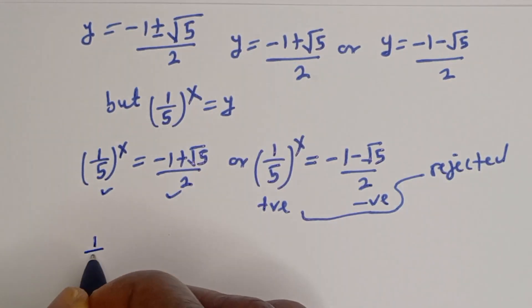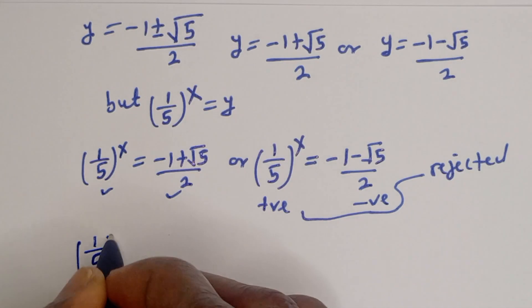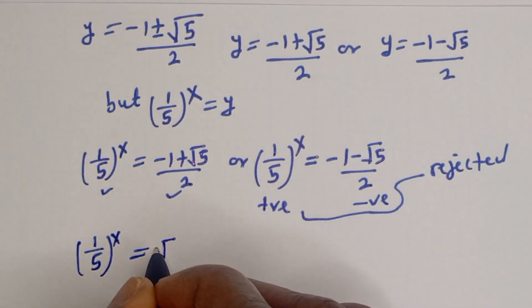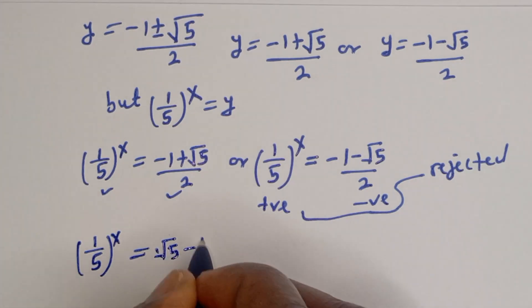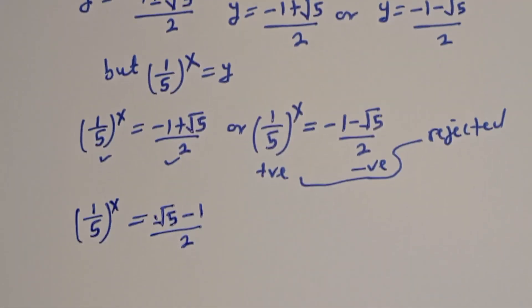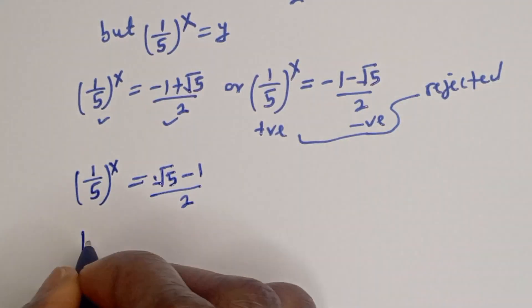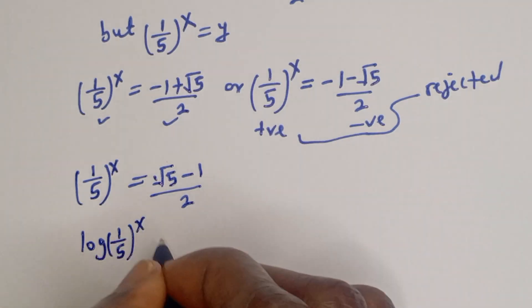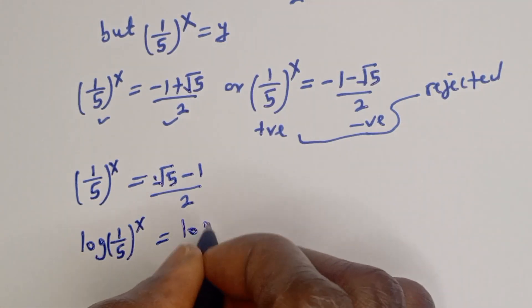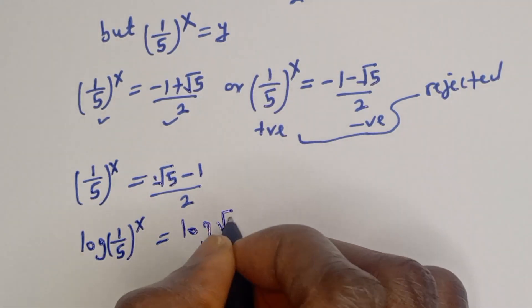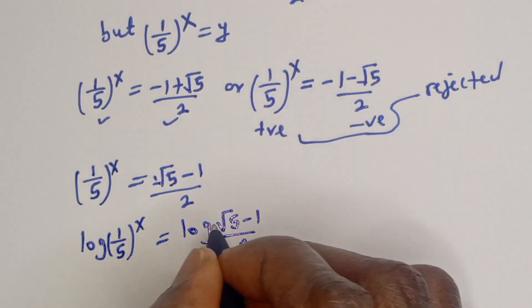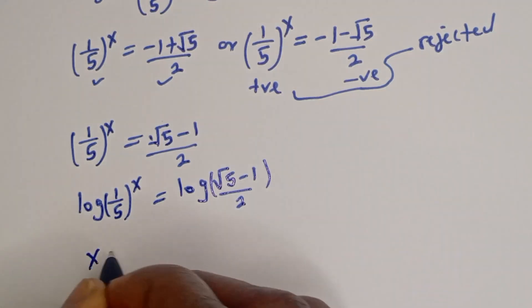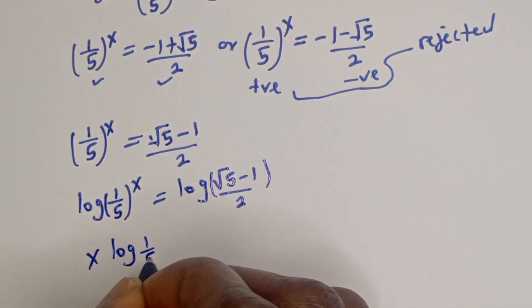So we have 1 over 5 to the power of s equals (root 5 minus 1) over 2. Taking the log of both sides: log of (1/5) to the power of s equals log of (root 5 minus 1) over 2. This gives s times log(1/5) equals log of (root 5 minus 1) over 2.